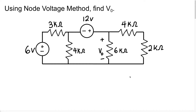In this video we're going to be using the node voltage method to find the voltage VO, which is the voltage across this 6k resistor here. The first thing we're going to do when using the node voltage method is to identify all of our essential nodes and choose one to be our reference node. We have one big node down here, so I'm just going to choose this node down here to be our reference node.